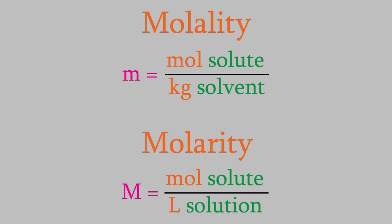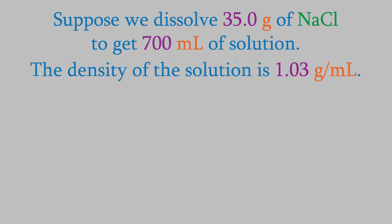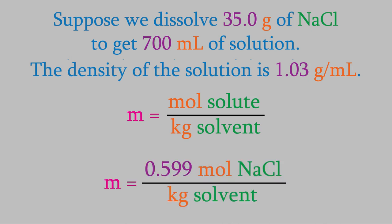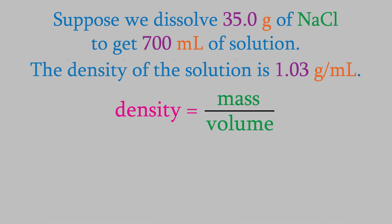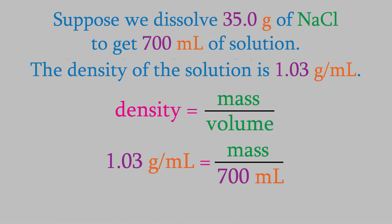Let's determine the molality of the NaCl solution from the previous example. Again, we have 35.0 grams of sodium chloride and 700 mL of total solution. We need one additional piece of information: the density of the solution is 1.03 grams per milliliter. The molality is moles of solute over kilograms of solvent. We already calculated the moles of NaCl — it's 0.599 moles. To get the kilograms of solvent, we'll use the density. Density equals mass divided by volume, so with a density of 1.03 g/mL and 700 mL, the mass of the solution is 721 grams.